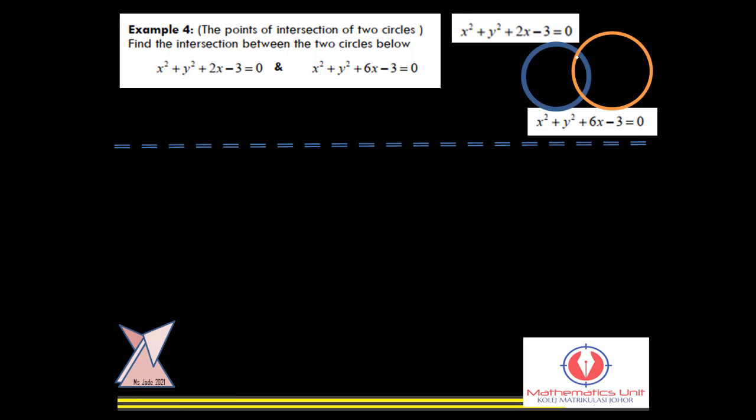What we have to do now is make sure where is the intersection point. So the intersection point is between this and this. Maybe you can label it as s1, y1, and this is s2, y2. In order to solve this, we will try to arrange the equation of circle: x² + y² + 6x - 3 = 0 minus x² + y² + 2x - 3 = 0.